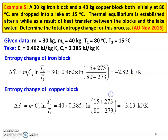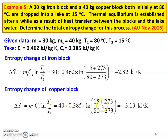Entropy change of the copper block: delta S_C = M_C × C_C × ln(T2/T1). So, 40 × 0.385 × ln((15 + 273) / (80 + 273)) equals minus 3.13 kJ per Kelvin. The copper block is also cooled; there is heat loss, so the change in entropy is negative, minus 3.13 kJ per Kelvin.